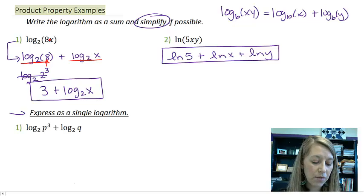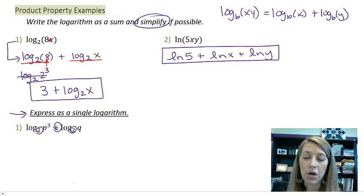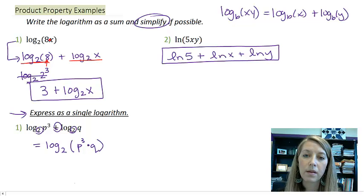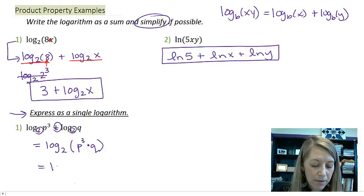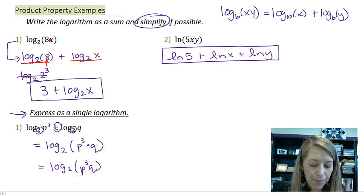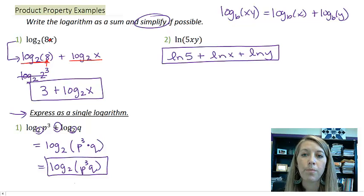And then this one down here, we're going to go the opposite way. So I have an addition. My bases match. So that means I can put it together as a single log. And so this is log base 2 of p cubed times q. And that's all we can do with it at this time. I guess we could maybe simplify it just a little bit by taking care of the dot and just saying p cubed q. And that's perfectly fine. But that's all it wants us to do here. So we're basically just getting practice of writing these back and forth.